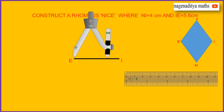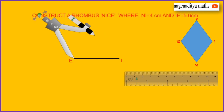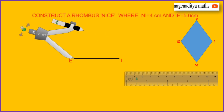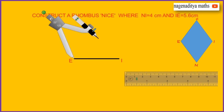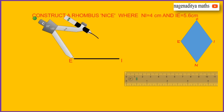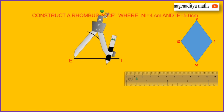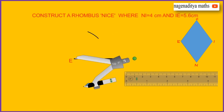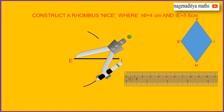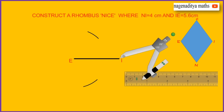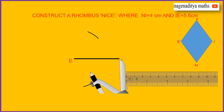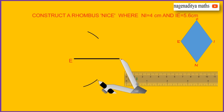Place the compass on point E, and draw arcs on both sides clearly — all sides are equal. Now put the point of the compass on I and draw another two arcs on both sides, intersecting the previous arcs.